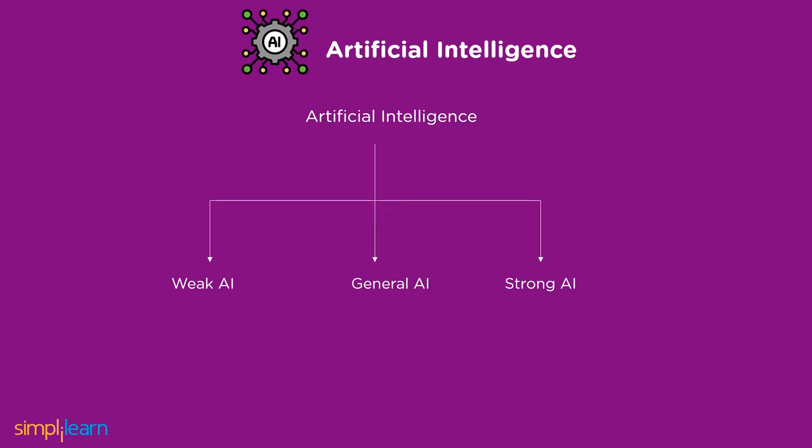There are many branches of artificial intelligence, which include machine learning, deep learning, natural language processing, robotics, expert systems, and fuzzy logic. Therefore, the correct answer for which is not a branch of artificial intelligence is option A — data analysis.